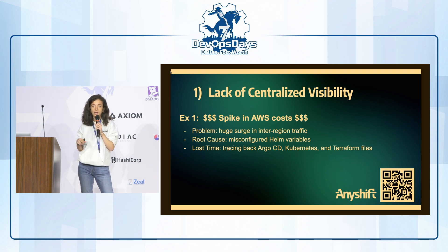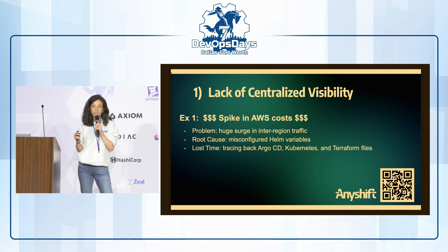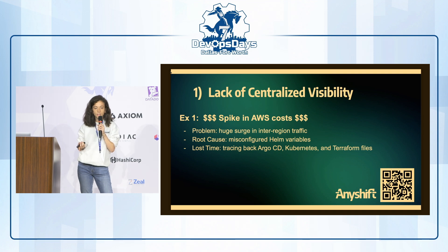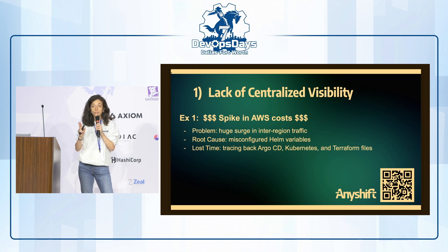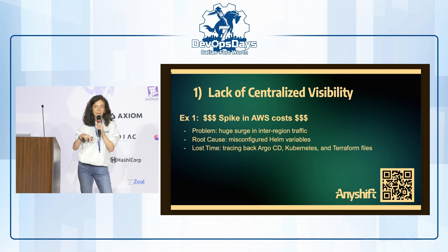The example I'm going to speak about is a company where they had a huge spike in AWS cost, something that happens quite frequently, which was due to a surge in inter-region traffic. The root cause was actually a misconfiguration in Helm variables — the inter-region traffic was between Paris and London. A lot of time was lost because of this lack of visibility, searching through different files such as Terraform, Helm files, etc.